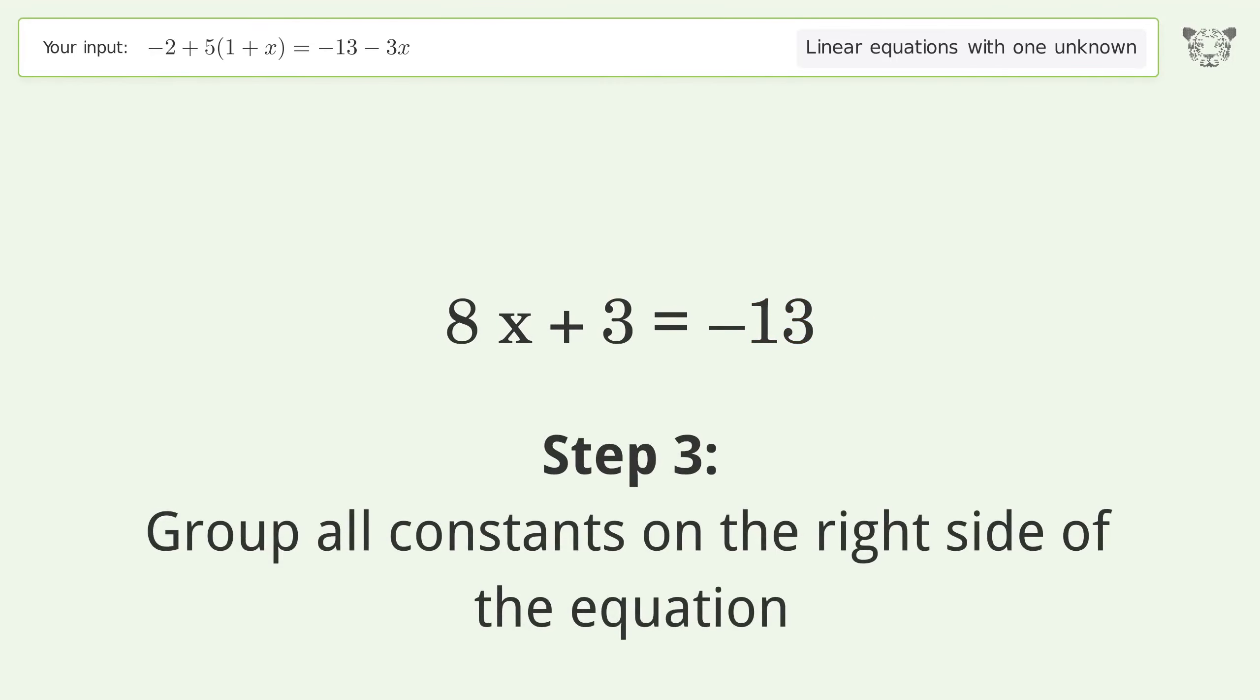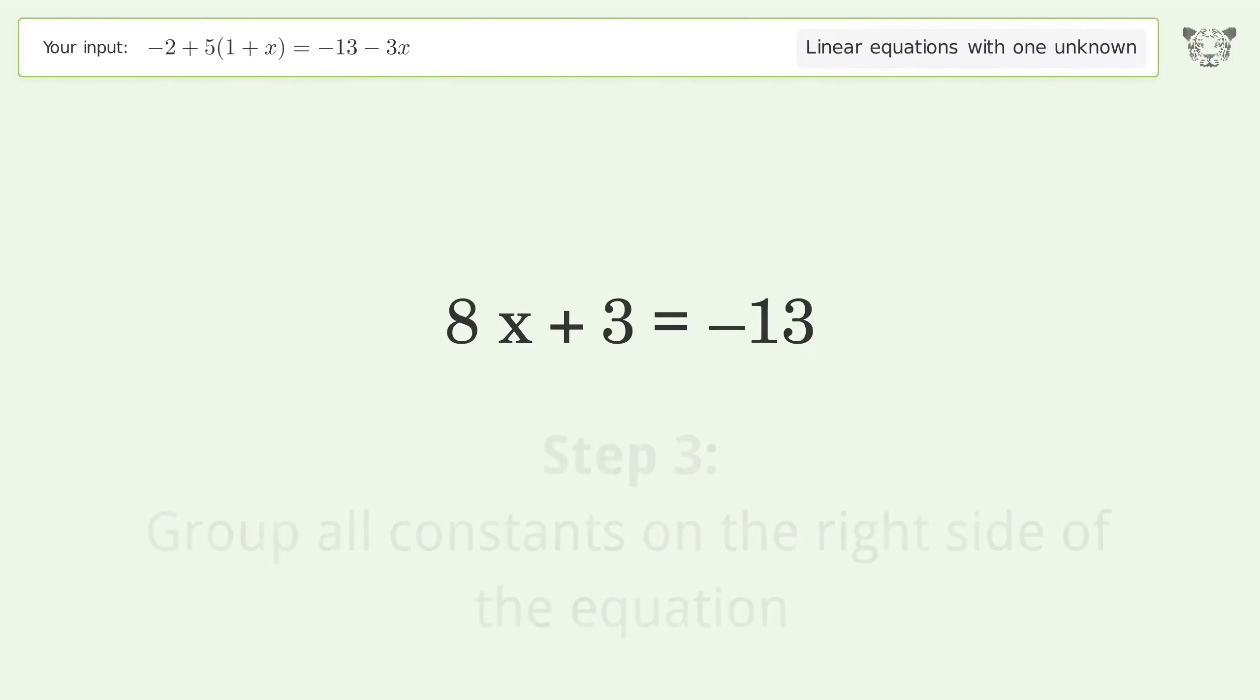Group all constants on the right side of the equation. Subtract 3 from both sides. Simplify the arithmetic.